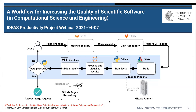Welcome to the HPC Best Practices webinar series. This series is brought to you by the IDEAS Productivity Project, which is funded by the Exascale Computing Project of the U.S. Department of Energy. This series is a collaboration involving the computing facilities at Argonne, Oak Ridge, and Lawrence Berkeley National Labs. I'm Osney Marcus from Lawrence Berkeley. Ashley from Oak Ridge and I will be the hosts for today's webinar: Workflow for Increasing the Quality of Scientific Software.